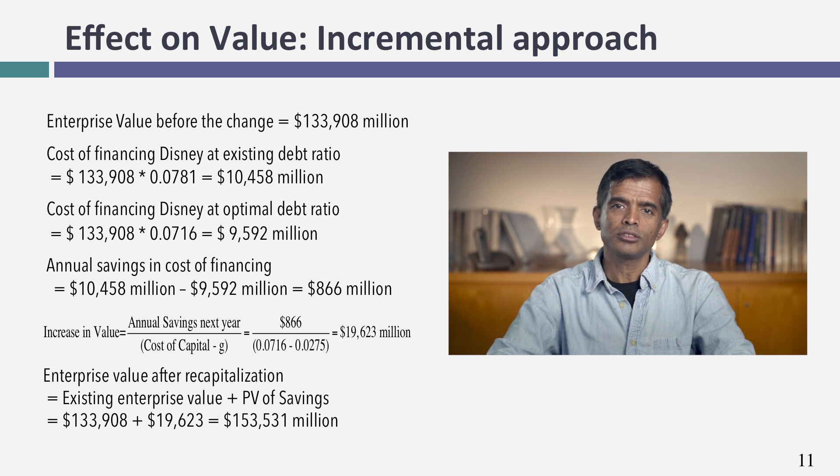So why should Disney do this? My answer won't be that their cost of capital goes to 7.16% — it will be that their value as a business will increase by $19.6 billion. Now let's get to specifics. The way we're suggesting they do this is to buy back stock. So suppose you ask: what price should we pay on the buyback, or what will happen to the stock price if we borrow $39.1 billion and buy back stock?